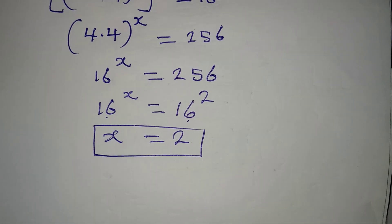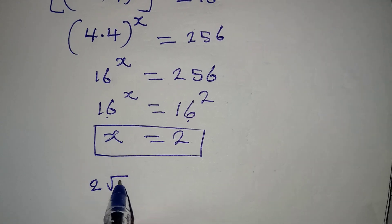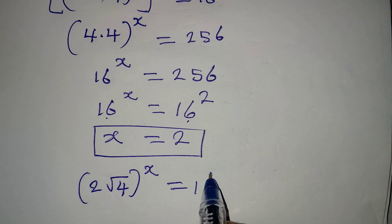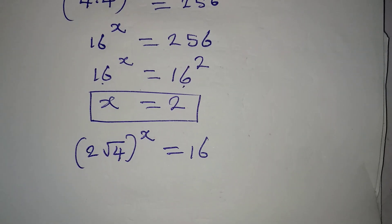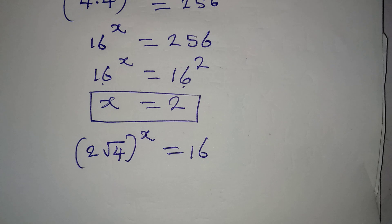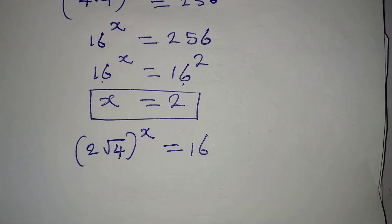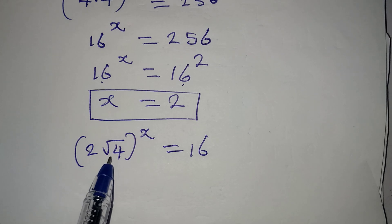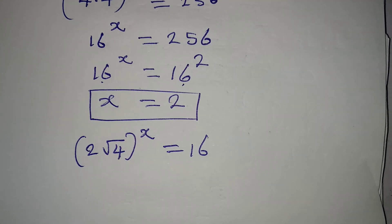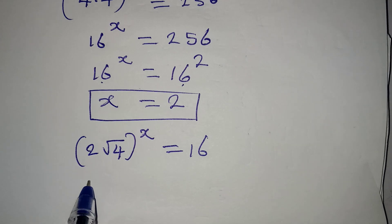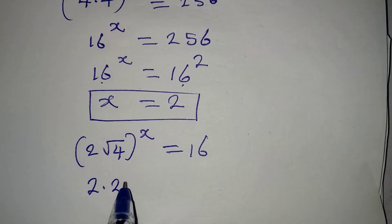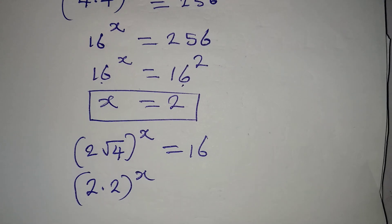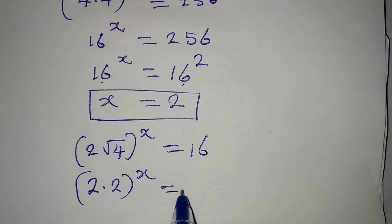Now let me get the second method. We have (2√4)^x = 16. The second method is even simpler and easier. If you look at 4 here, it's a perfect square, so this is the same thing as 2 times 2 to the power of x, because the square root of 4 is 2.